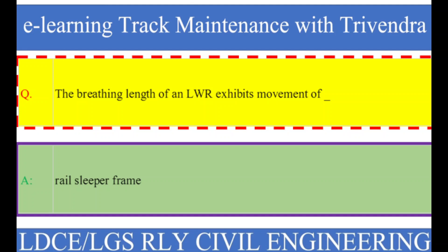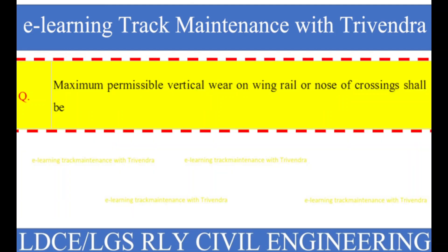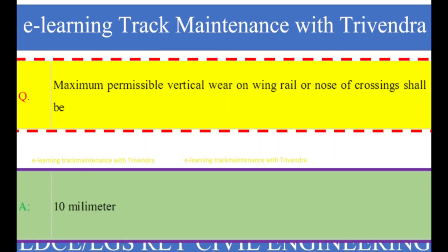Question number 58: Maximum permissible vertical wear on wing rail or nose of crossings shall be? The right answer is 10 millimeters.